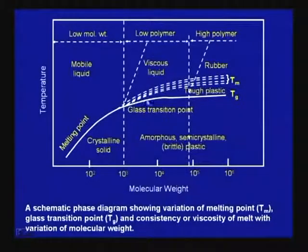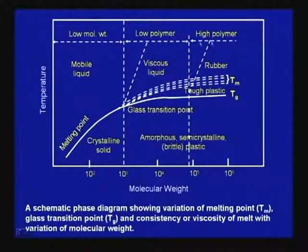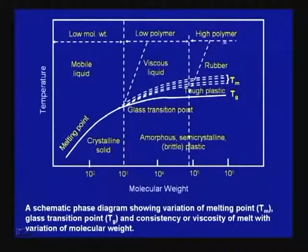Below Tg, amorphous material is brittle; above Tg it is a little flexible, so it can absorb shock and impact load. This continues until the melting transition — beyond melting it becomes a mobile or viscous liquid, and that is also related to the molecular weight of the polymer. As you go on increasing the molecular weight, it can withstand higher temperature, remain dimensionally stable, be tougher, behave like a plastic, or behave like an elastomer — you can predict this looking at this kind of phase diagram.